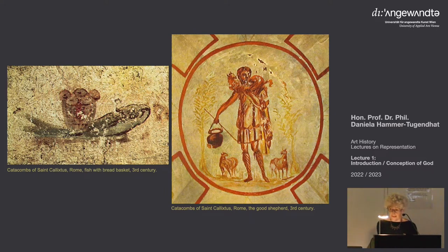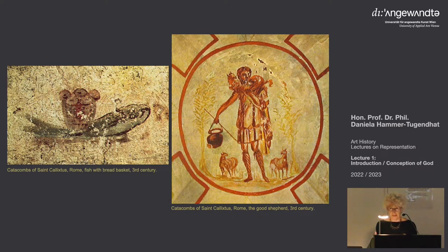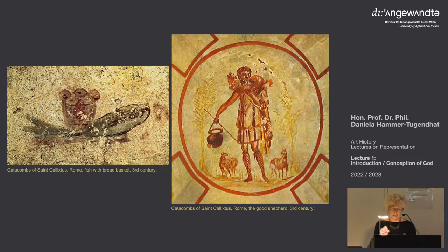What you see is the good shepherd — meaning Christ as a good shepherd. This was actually a pagan image of Dionysus. And you see the fish, which is strange to see as meaning Jesus. That is symbolic because in Greek, the first letters of 'fish' are ICHTHYS, and these letters stand for Iesous Christos Theou Yios Soter — Jesus Christ, Son of God, Savior.